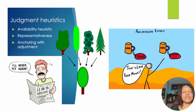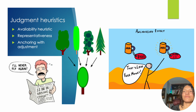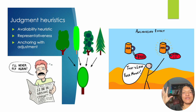Availability heuristic: this is information that we recently heard, hear frequently, or that stands out — it's readily available, at the top of our brain. For example, you've probably heard about shark attacks and think, don't go into the ocean, stay away from sharks. But if you look at the statistics, the number of people who die in shark accidents is so much less than those who die in car accidents or plane crashes. Yet a shark attack just stands out in our brain — that's the availability heuristic.